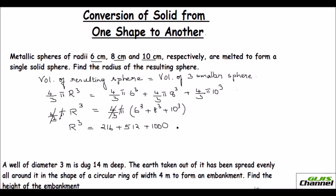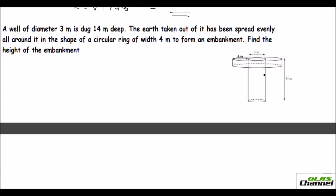Adding them up: 216 + 512 + 1000 = 1728. So R³ = 1728, and R = ∛1728 = 12 centimeters. The radius of the resulting sphere is 12 centimeters. Now here is the next problem: a well of diameter 3 meters is dug 14 meters deep.